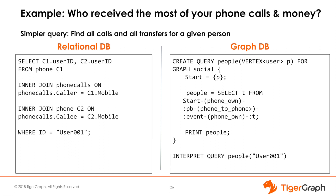Now we look at a query you might run for this use case: who received the most of your phone calls, and who received the most money from you. This is really two similar queries — one about phone calls and one about bank transfers — so we'll focus on just the phone calls. In order to find out who received the most phone calls, we have to scan all the phone calls and group them by callee. All the information seems to be in one table — the phone call table — but not exactly, if we want to know the names of the persons, not just their phone numbers.